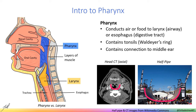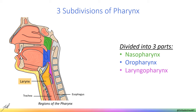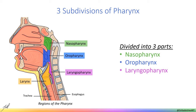The pharynx is divided into three regions named according to the space it's behind: nasopharynx behind the nasal cavity, oropharynx behind the oral cavity, and laryngopharynx behind the larynx. Each subdivision of the pharynx contains certain features. We'll discuss pharyngeal muscles and Waldeyer's ring first since they span multiple subdivisions, and then we'll talk about each subdivision individually.